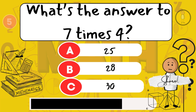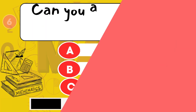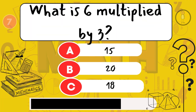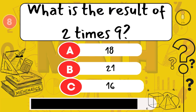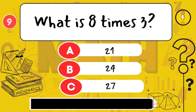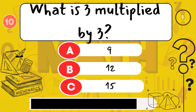What's the answer to 7 times 4? 28. Can you answer 10 times 3? 30. What is 6 multiplied by 3? 18. What is the result of 2 times 9? 18. What is 8 times 3? 24. What is 3 multiplied by 3? 9.